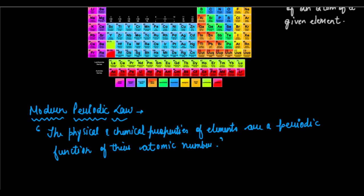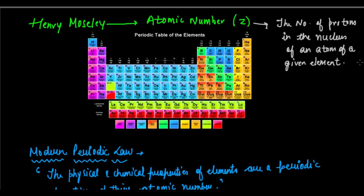Let us have a look at the periodic table. He classified elements on the basis of atomic number, so the atomic mass system was abolished. He classified elements somewhat similar to Mendeleev's — he had vertical columns called groups and horizontal rows called periods.